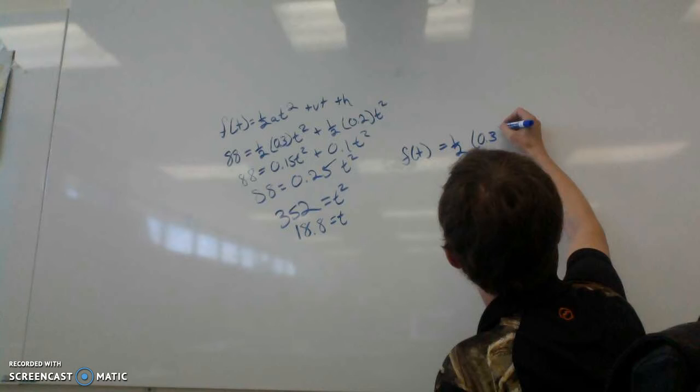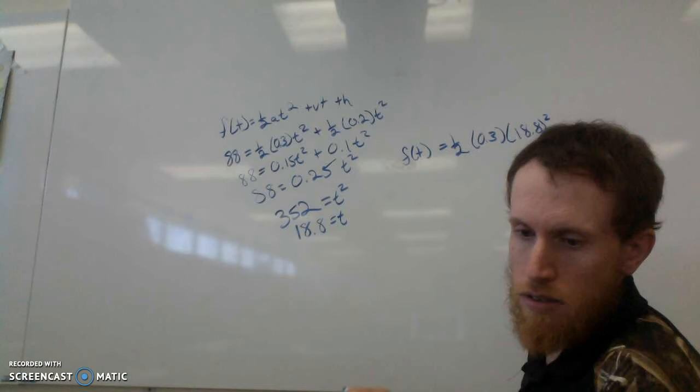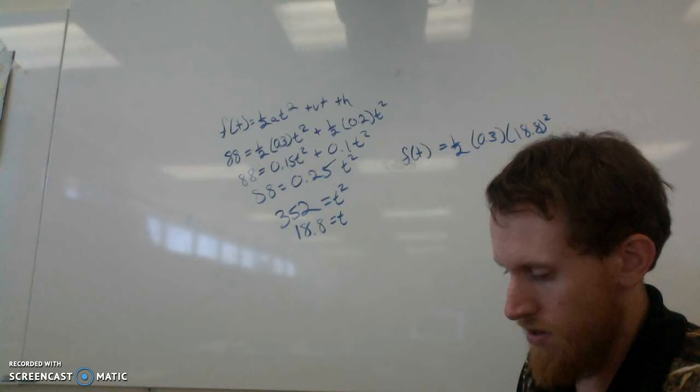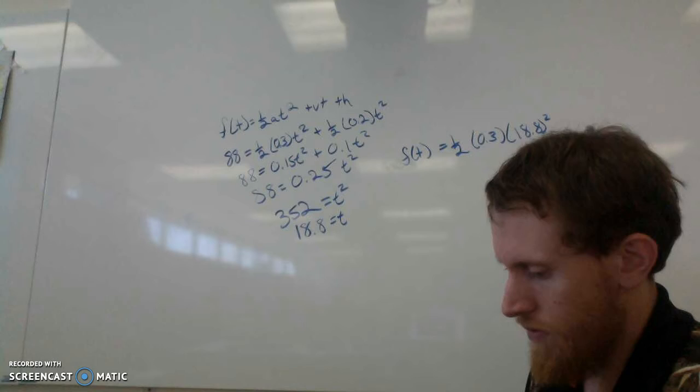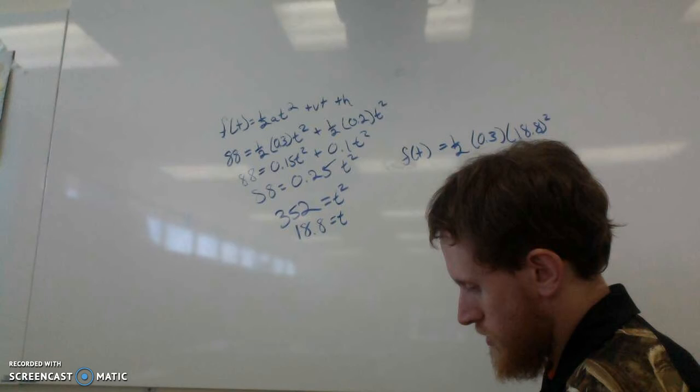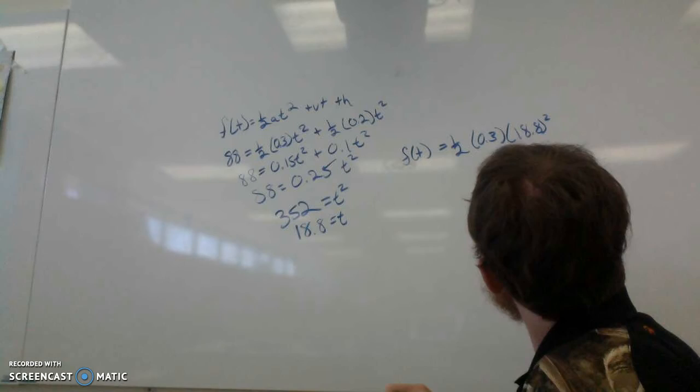So one half times 0.3 times 18.8 squared. 18.8 times 0.3 times 0.5, and 18.8 squared.